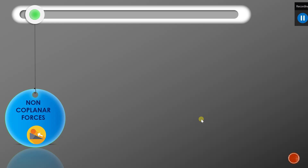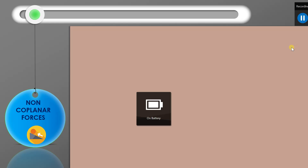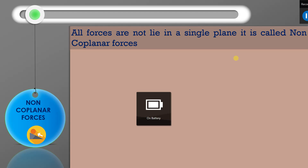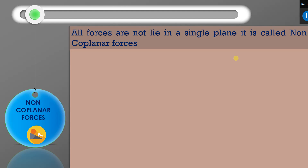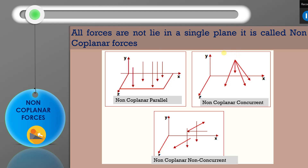Non-coplanar forces are those where all forces acting on a body do not lie on the same plane. Non-coplanar forces are classified as non-coplanar parallel forces — including like and unlike parallel — and non-coplanar concurrent forces, where all forces meet at a single point but do not act on a single plane.